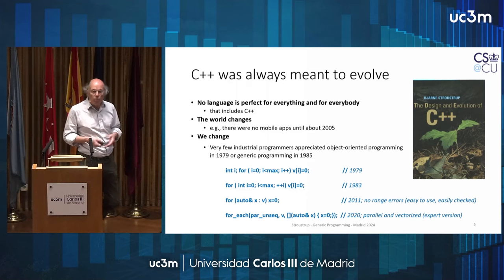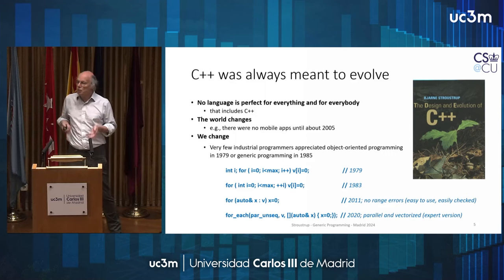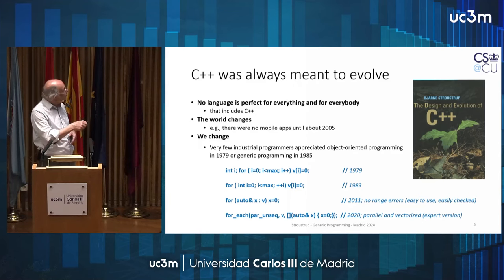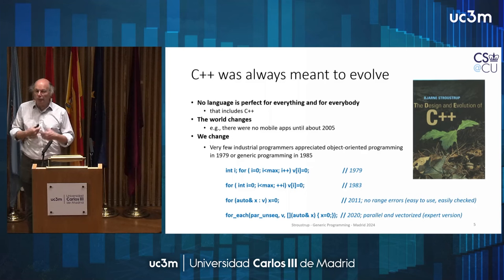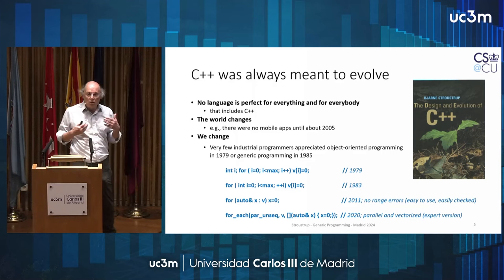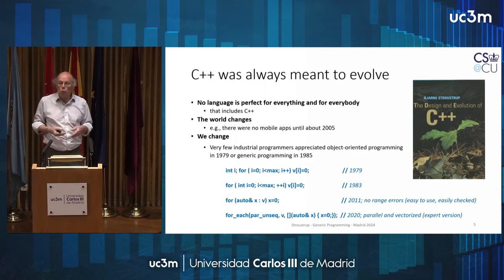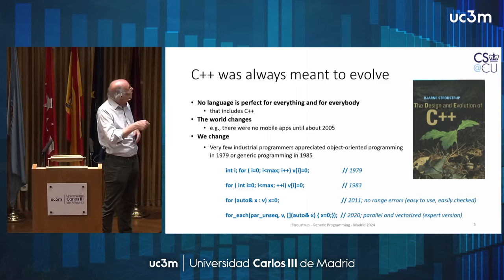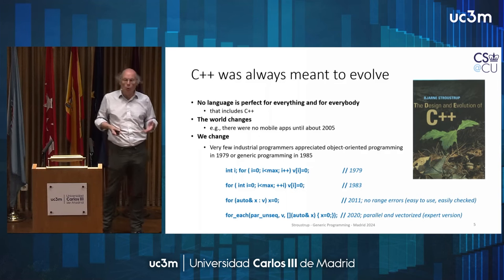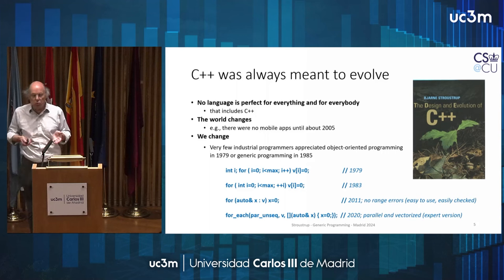We change. The world changes. Our problems change. There's a little example of how something as simple as a for loop or a sequence of elements has evolved over the years. There is the standard way of going through a vector or array or list today — it is shorter and more efficient than what we could write back in the old days using a C-style loop. And if you use range checking, it is much faster. There's also the expert level kind of stuff for when you really want to squeeze the last juice out of the machine.